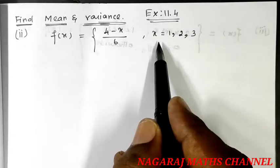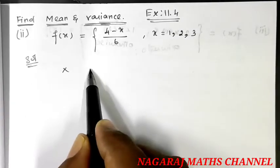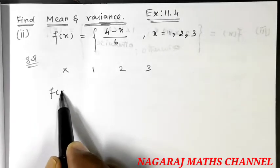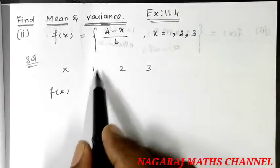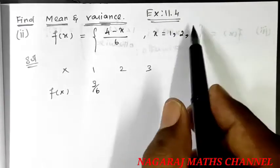This is the probability mass function for this solution. So, what values are x? 1, 2, 3. If we have f of x table, x is 3 by 6.